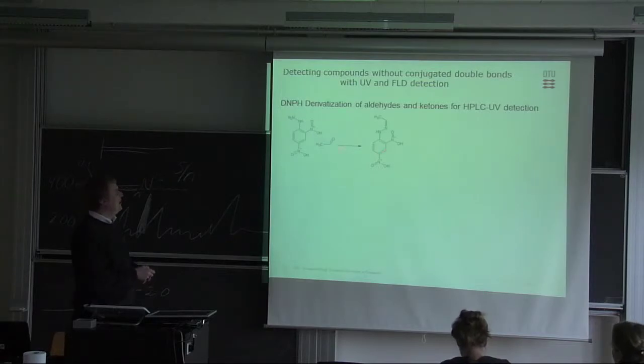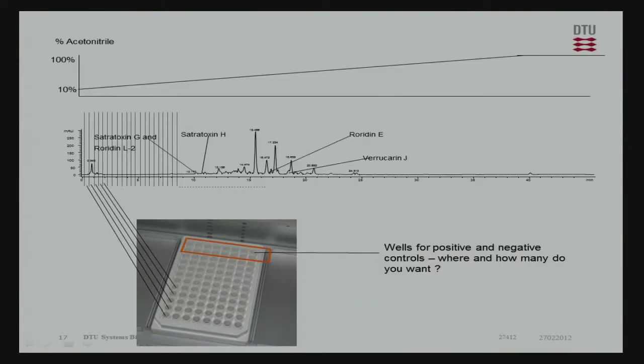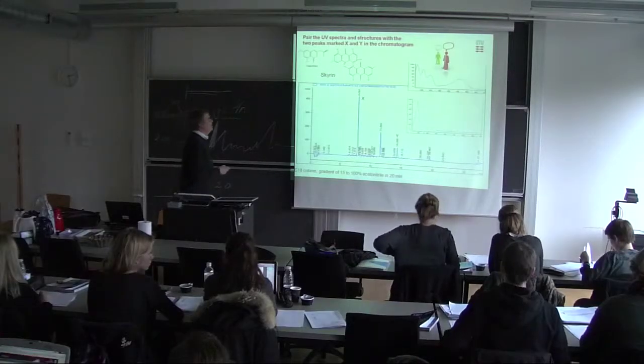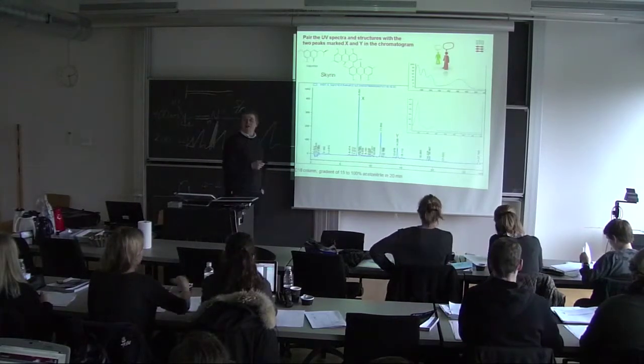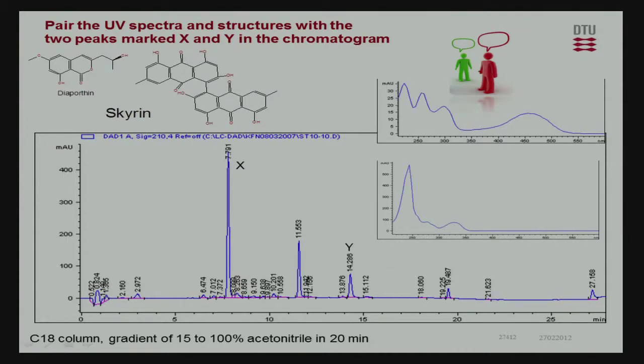On this slide, this is the analyte, this is the reagent. So when you look at these two molecules, I think the easiest thing you should remember for the exam is that the more conjugations you have, the further out in the wavelength spectrum you have. So this one is, of course, this one. And then this one must be this one.